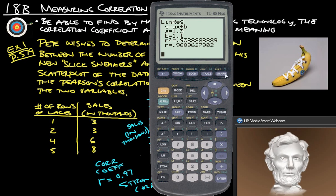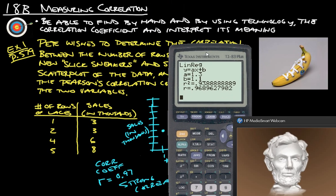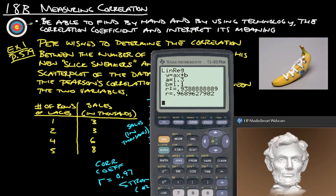Okay. So you should now be able to say that you're able to find by hand and by using technology the correlation coefficient and interpret its meaning. All right. If you have any questions, please ask. Thanks.